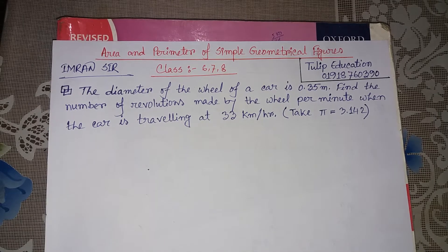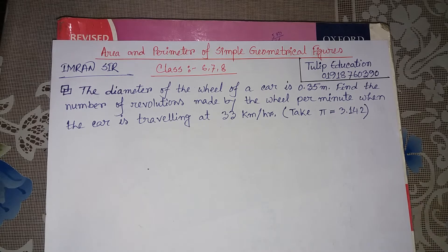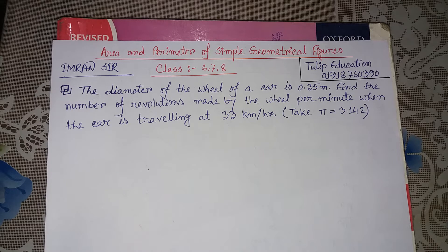We have been given the pi value in the next step. The pi value is 3.142. When the pi value is not given, we have two options: 3.142, or 3.1416, or 22 by 7.